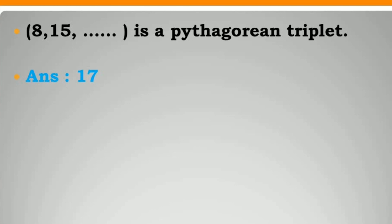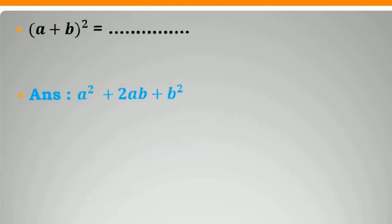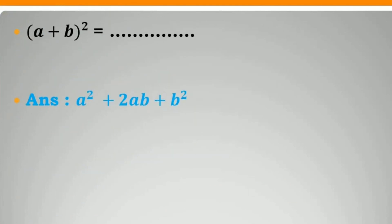The set (8, 15, 17) is a Pythagorean triplet. (A plus B) bracket square is equal to A square plus 2AB plus B square.